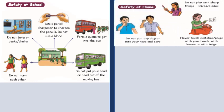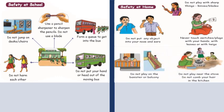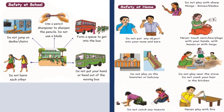What are the safety procedures we have to follow when we are at home? Do not play with sharp things like knives and blades. Do not put any object into your nose and ears. Never touch switches or plugs with your hands, with leaves, or with twigs. Do not play on the banister or a balcony. Do not play near the stove. Do not comb your hair in the kitchen. Do not catch any insects. Do not play with fire.